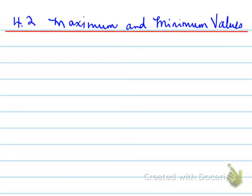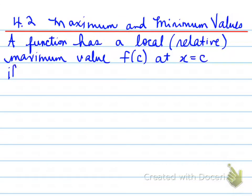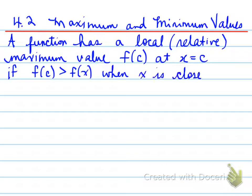Section 4.2: maximum and minimum values. A function has a local or relative maximum value, f(c), at x equals c, if f(c) — the y value — is greater than all the other y values close to that original point c. So on either side of c, the values are going to be smaller, and f(c) is greater.